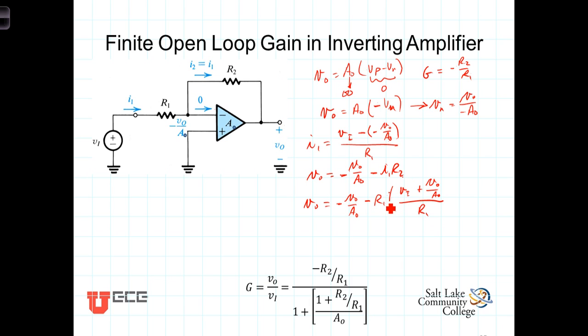And this isn't an R1, this isn't an R2, so let's just make sure we did this right. We've got then this negative V0 over A0 minus R2 times I1, but I1 is VN minus minus is a plus, so VN minus V0 over A0 all divided by R1.